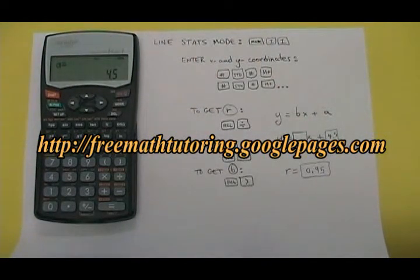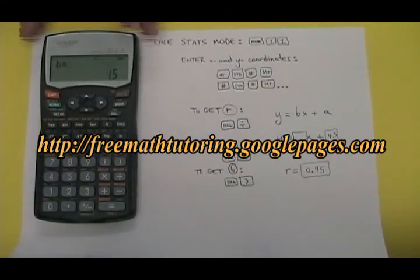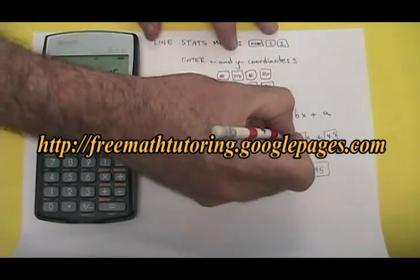Now I need my b. To get b, I do recall close bracket. My b is 1.5. So in the position for b in the formula, I am entering 1.5.